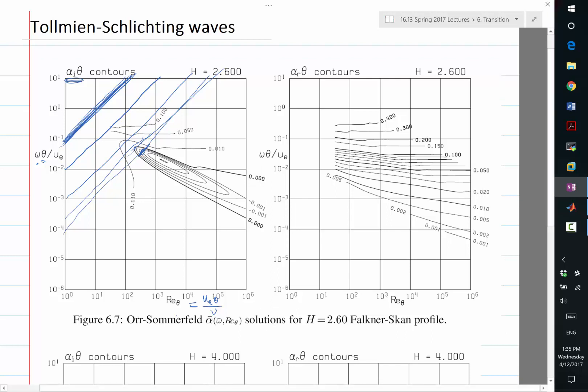And that happens at which location on the boundary layer? Where is the first location on the boundary layer that can support any growth of small disturbances? It is at that point. This is the end.